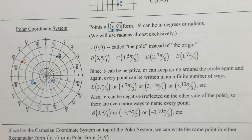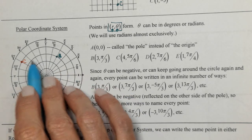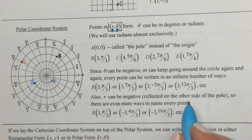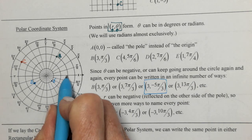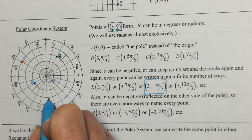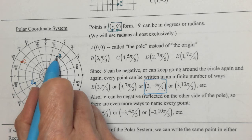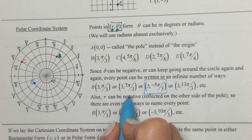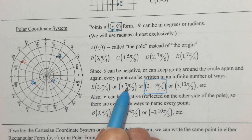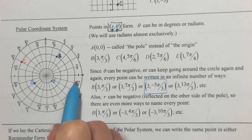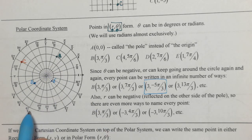Theta can be negative, which means instead of going counterclockwise you'll be going clockwise. So the point (3, −5π/3) would be out 3, then go backwards 5π/3 — that would land where B is. Theta can also go around the circle more than once: 7π/3 is 6π/3 plus π/3, so out 3, go around once, then π/3 more — you'd be back to B.